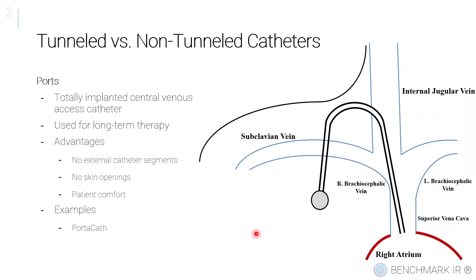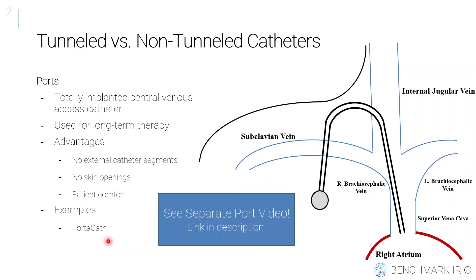Ports are totally implanted central venous catheters — everything is completely inside the patient with no external catheter segments. The port is completely subcutaneous and has a soft surface that can be easily penetrated with a needle. These are used for long-term therapy — months to years — and are very often used by chemotherapy patients requiring frequent sessions. A port can actually withstand up to 2,000 needle punctures. They're also more comfortable for patients since there's no external segment. An example is a port-a-cath. Ports will be covered in a dedicated separate video due to their unique indications and placement aspects.